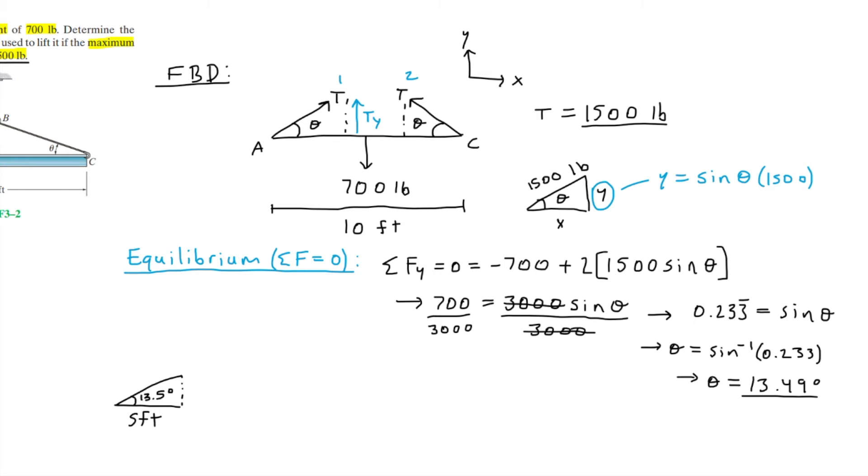Now we're solving for the length of the cable. I'll be labeling the hypotenuse as L. We can use trigonometry again to solve for the length L. Starting off with SOHCAHTOA, we can implement cosine. Since we know the adjacent side of angle theta, cosine of 13.5 degrees equals adjacent over the hypotenuse, which is 5 over L.